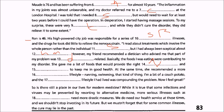However, my friend recommended a dietitian who advised me that part of my problem was diet-related — basically the food I was eating was contributing to my disorder. She gave me a list of foods that would provide the right vitamins and minerals to keep me in good health. At the same time she recommended a more active lifestyle — running, swimming, that kind of thing.